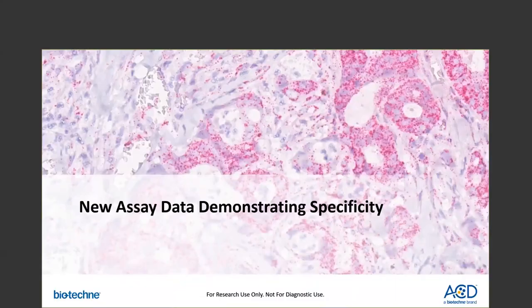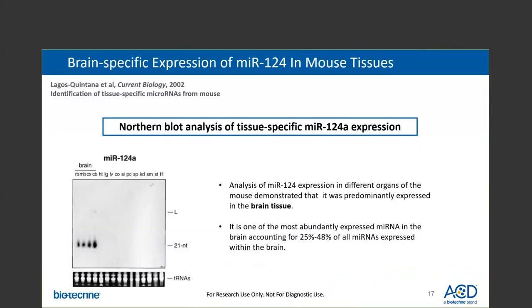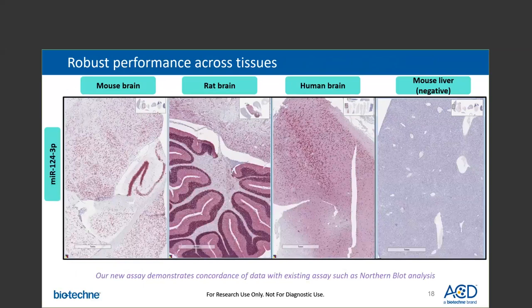In the next few slides, I'll show you some of our new assay data to demonstrate assay performance. First, I'll show you data demonstrating assay specificity, with some results validating published findings. Here is a publication using northern blot analysis showing that microRNA-124 is predominantly expressed in brain tissue, and is one of the most abundantly expressed microRNAs in the brain. Here is our internal data demonstrating robust assay performance across tissues with microRNA-124.